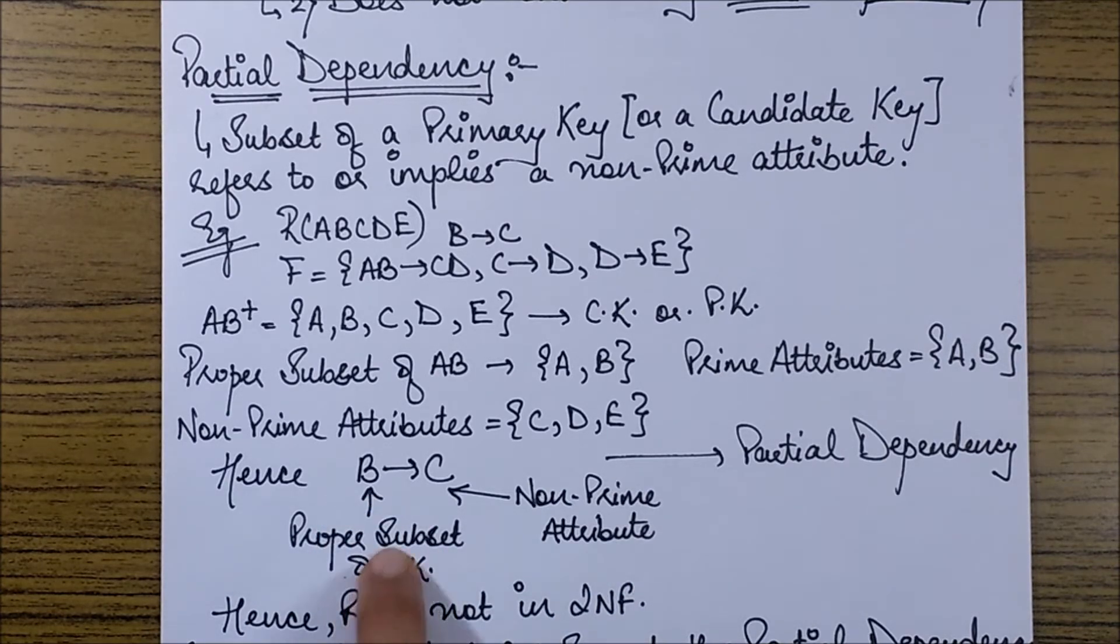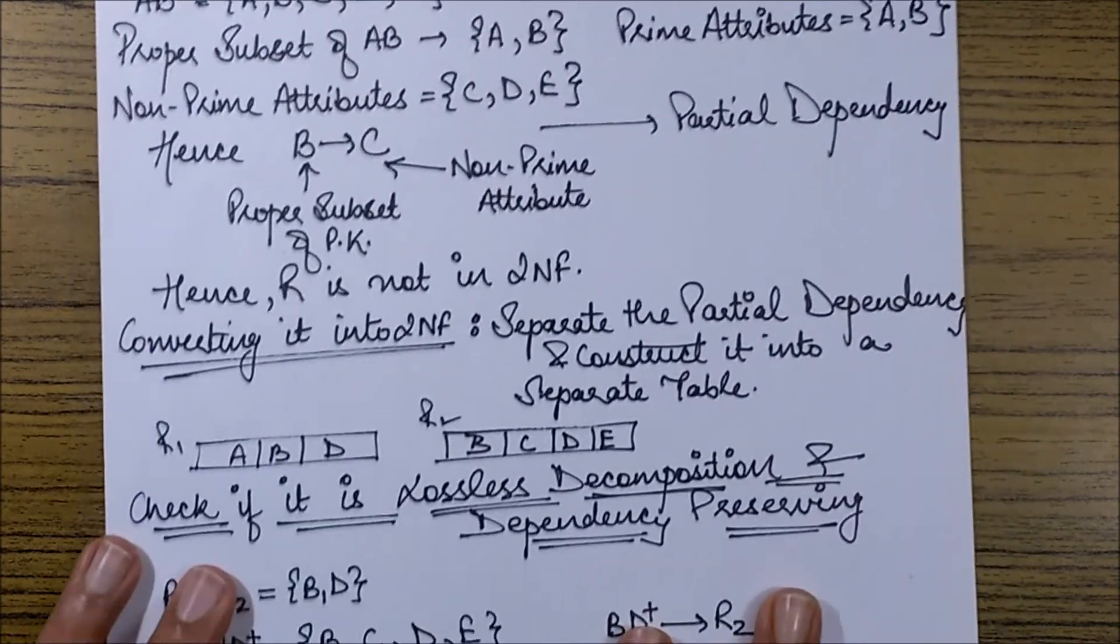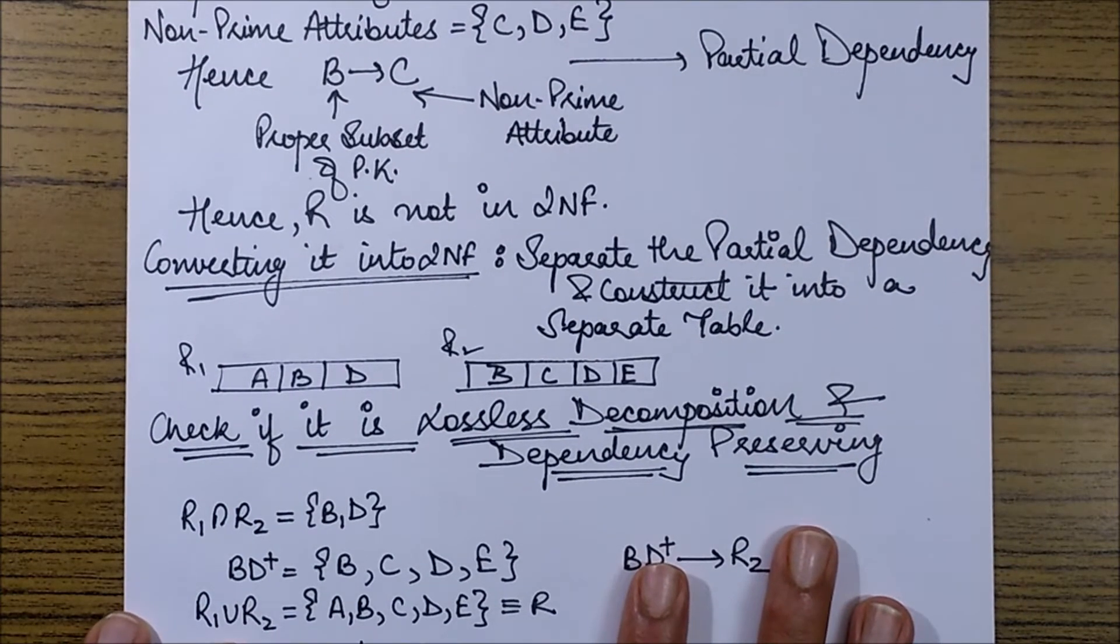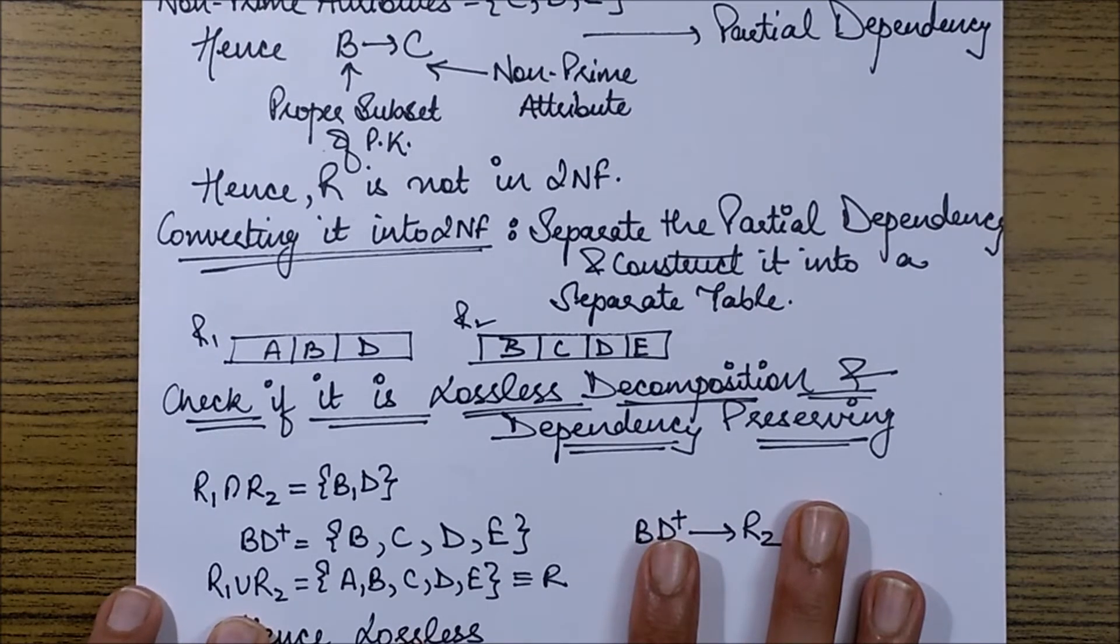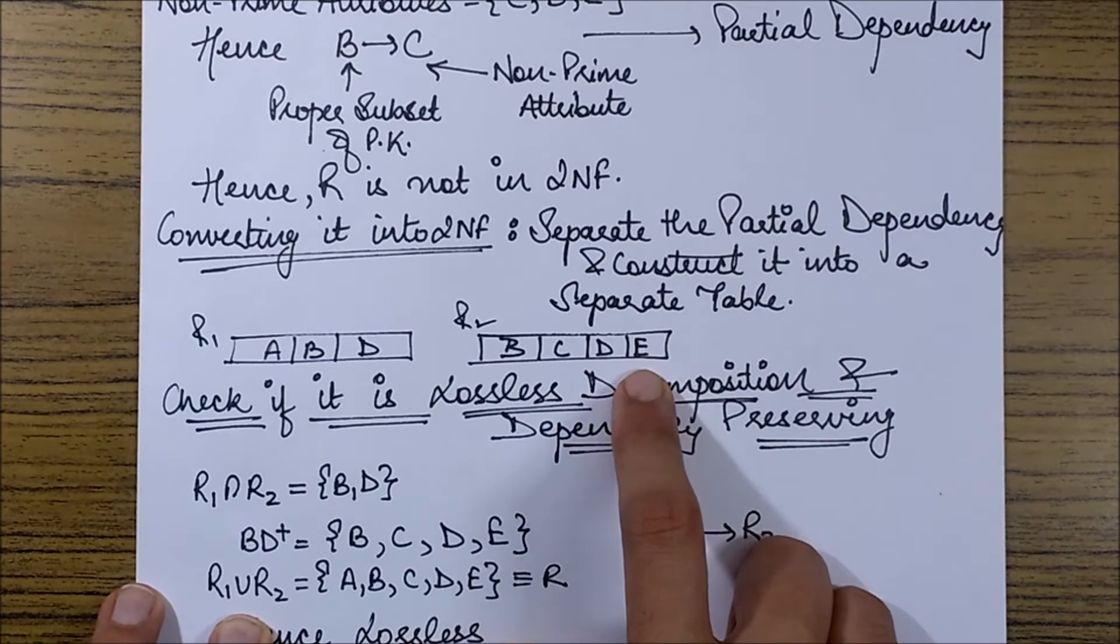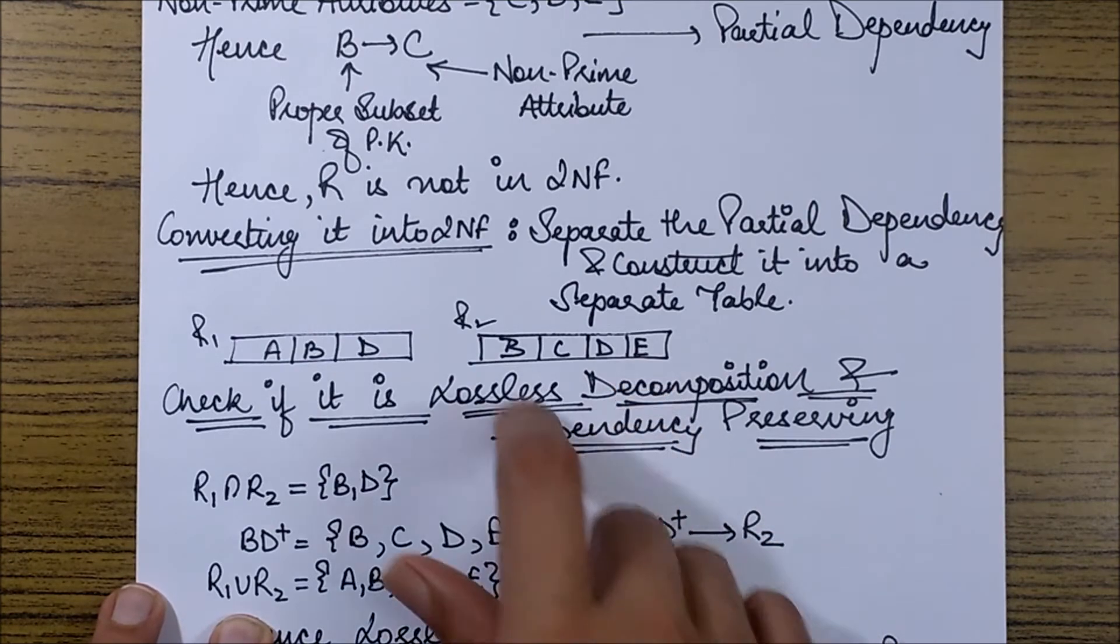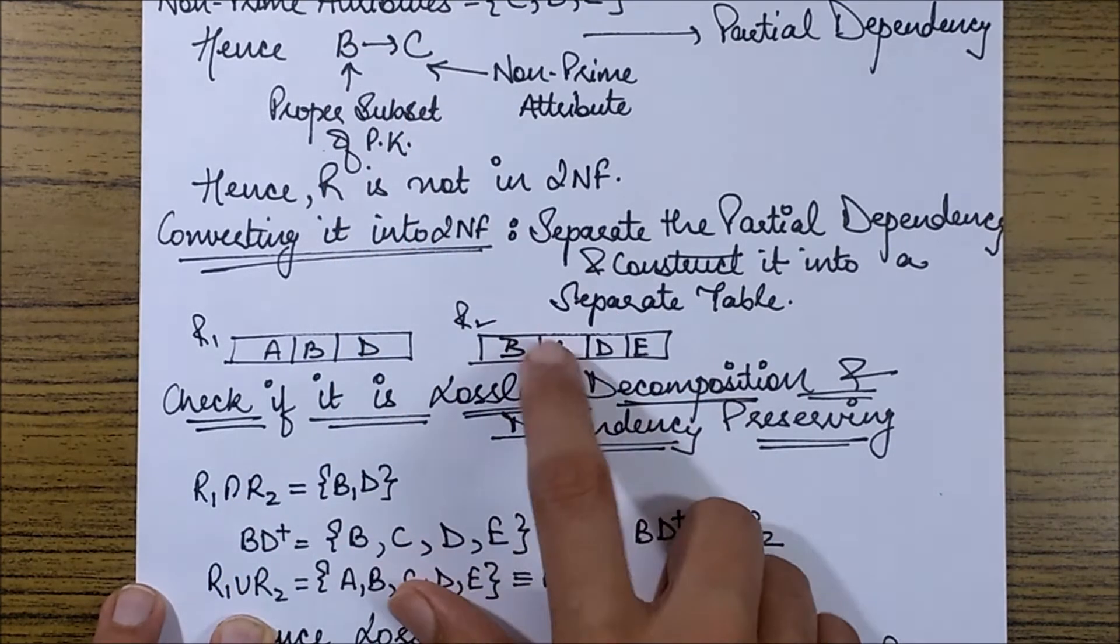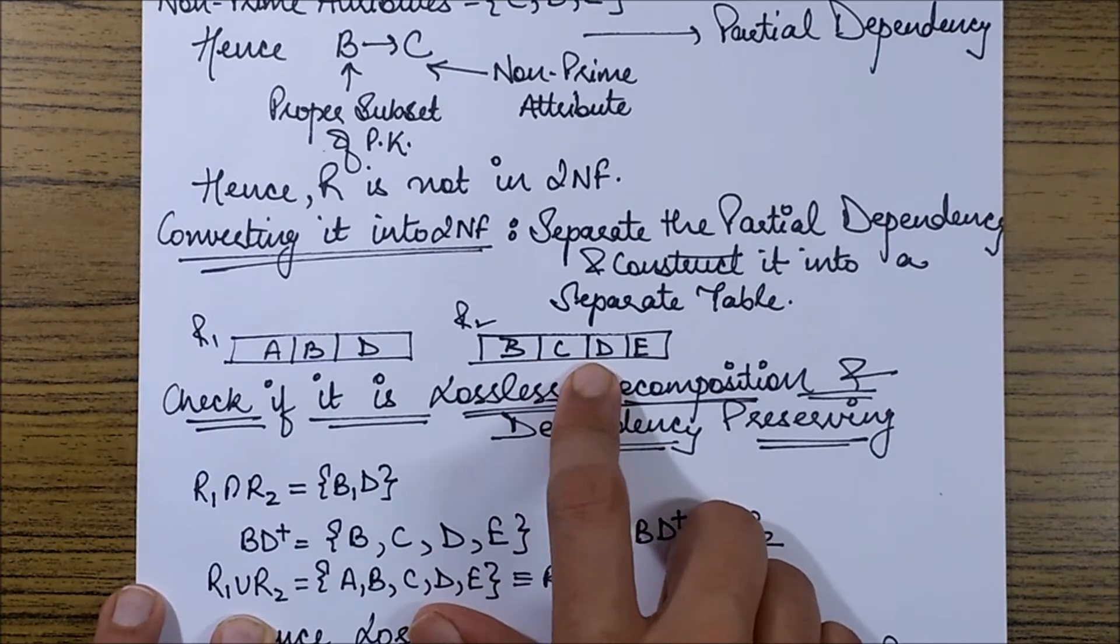So since the partial dependency is occurring in this relational schema it is not in 2NF and how do we convert it into a 2NF form then? We convert it by breaking the table into 2 decomposition tables such that the partial dependency occurs in a different table or a different relational schema. So the partial dependency was B to C. So B to C, B and C are occurring in different tables.